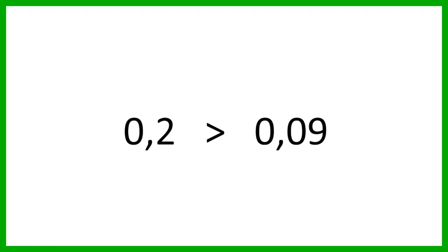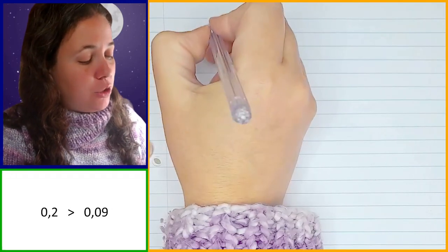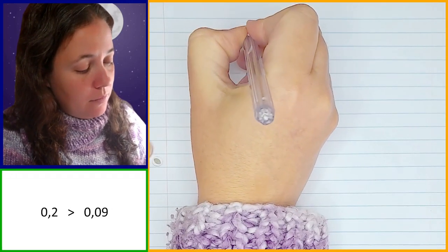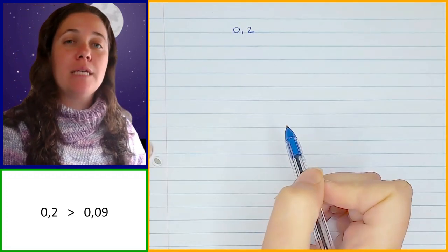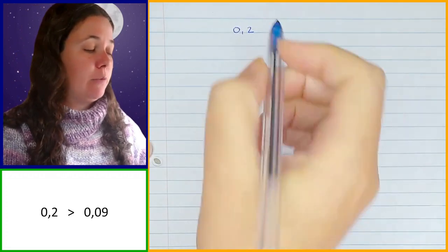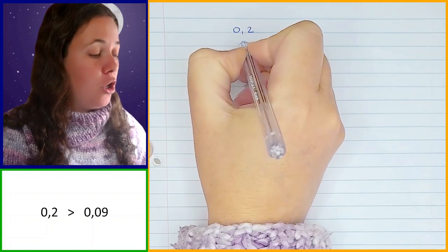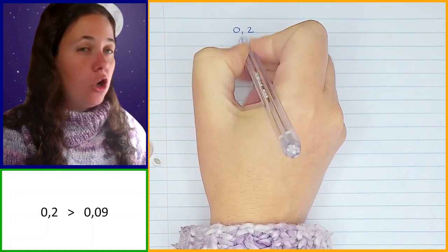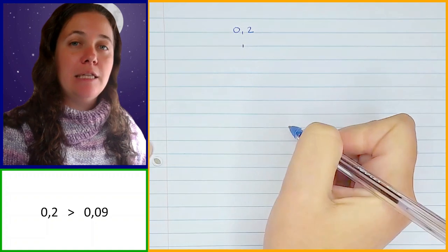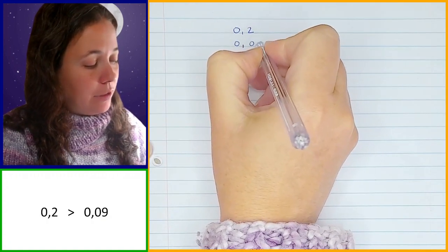So let's have a look at how we would do this without having to draw that huge table every single time. If I take the fraction 0.2, instead of drawing that whole table, what I'm going to do is take that fraction and the other fraction and write them directly underneath each other so the decimal point is in a column underneath each other. So then I've got 0.09.